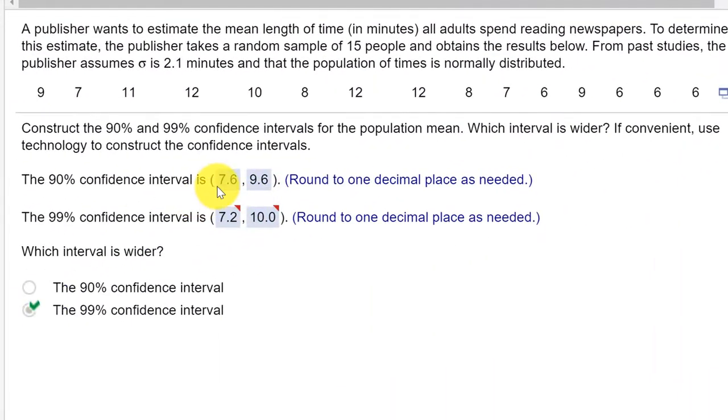We look over here in StatCrunch, and it says 7.6 and 9.6, but on this problem, it gives us an allowance of plus or minus 0.1 to allow for different types of technology, so that would be the right answer. The second part of the question says,